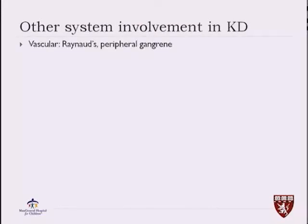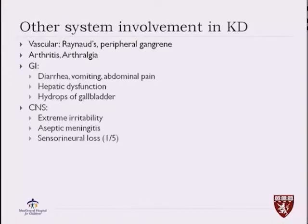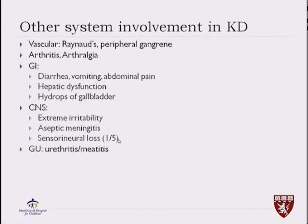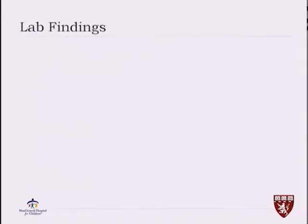Other systems in the body are involved. You can have vascular constriction leading to Raynaud's phenomenon or peripheral gangrene. They can have arthritis or arthralgia, gastrointestinal symptoms like hydrops of the gallbladder, hepatic dysfunction, diarrhea, vomiting, or abdominal pain. They are very irritable due to aseptic meningitis. One out of five kids have a sensorineural hearing loss that can lead to deafness. They can have urethritis or meatitis, anterior uveitis, and desquamation rash in the groin.